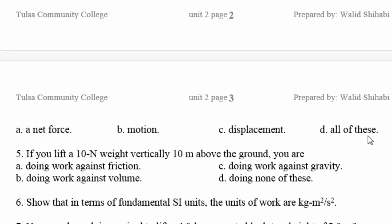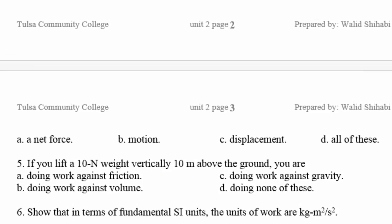Question four: work requires what? It requires net force, motion, and displacement — so all of these. Question five: if you lift a 10-Newton weight vertically 10 meters above the ground, you are doing work against gravity. When you lift anything in the vertical direction, you are doing work against gravity, and the work equals force times distance.